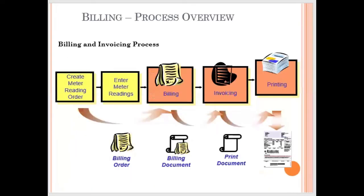Let's look more closely at the billing process. We first create the meter reading order, then enter the meter reading, then generate the billing document, then invoice the billing document and print it — once printing happens, the billing process is completed and it moves to the collection process. If there are any errors, we reverse in sequence: first reverse the invoicing document, then reverse the billing document, then reverse the meter reading — and then reenter and correct all the details.